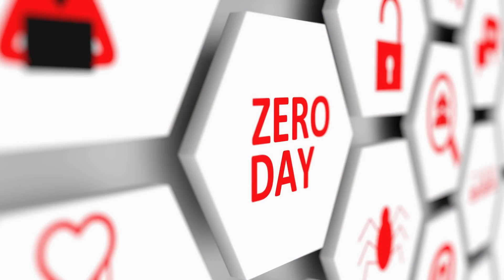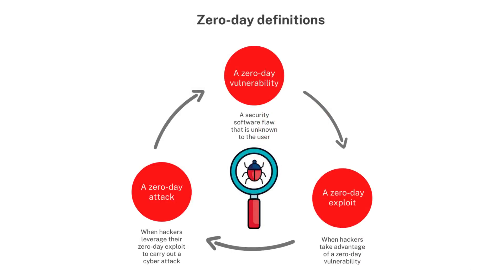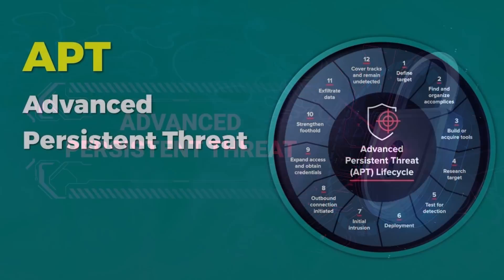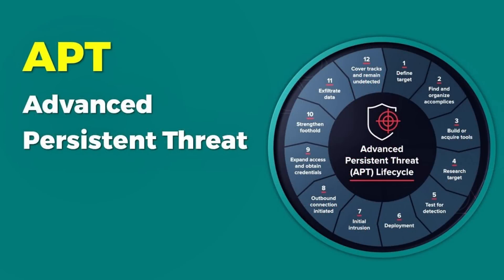The seventh type is zero-day exploits, where attackers exploit previously unknown vulnerabilities in software or systems before developers have a chance to fix them, giving attackers an advantage over security measures. On eighth number we have advanced persistent threats (APTs) — long-term targeted attacks where hackers gain unauthorized access to a system or network and remain undetected for an extended period.